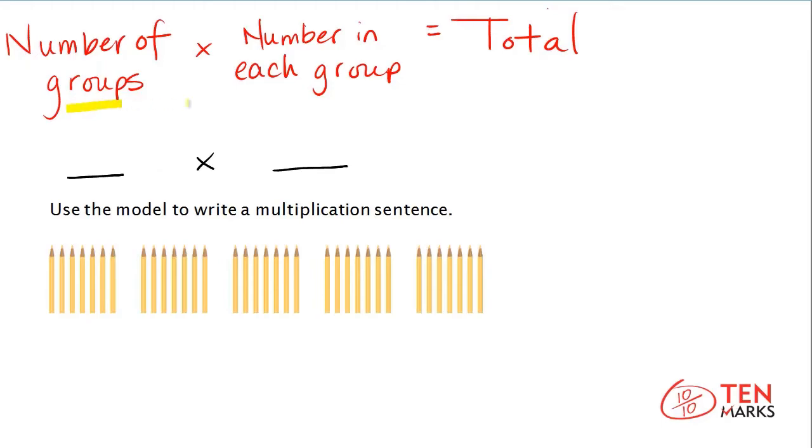So we need to know the number of groups and we need to know the number in each group to write the multiplication sentence. I will count the number of groups in blue. There are one, two, three, four, five. Five groups. Our first factor is five.